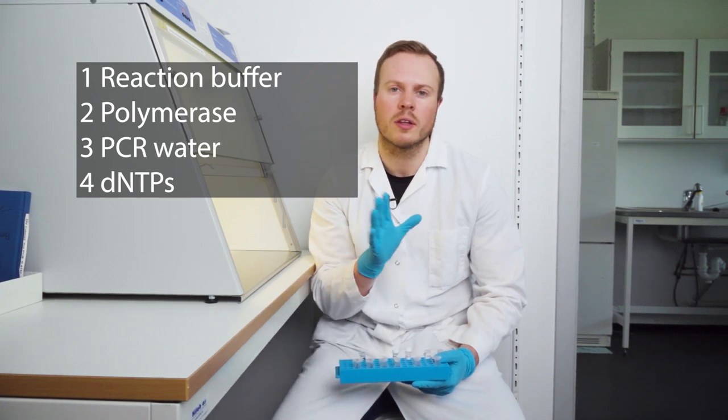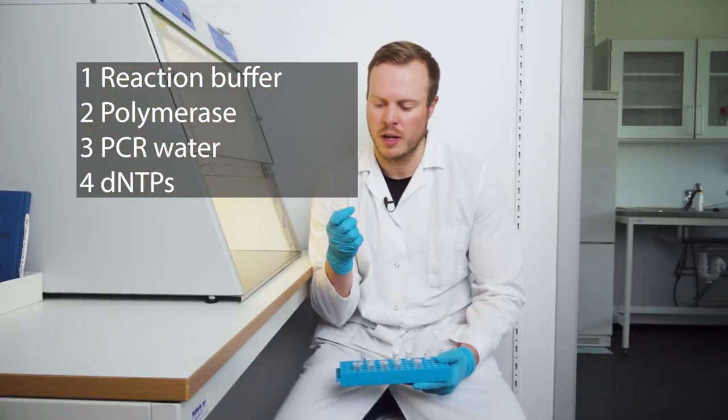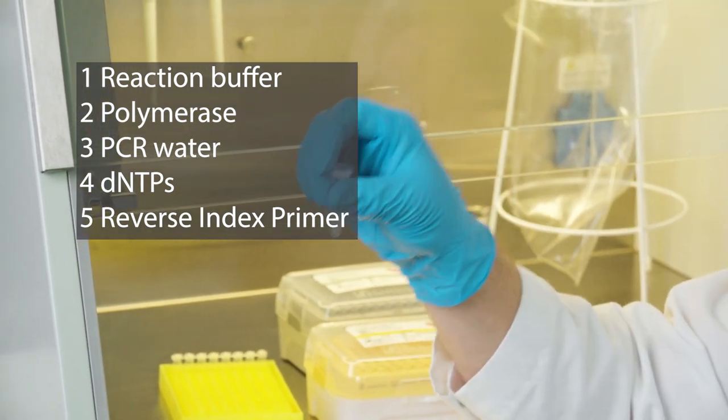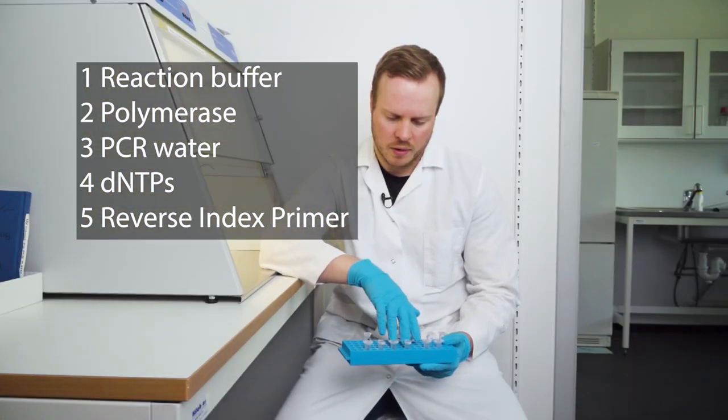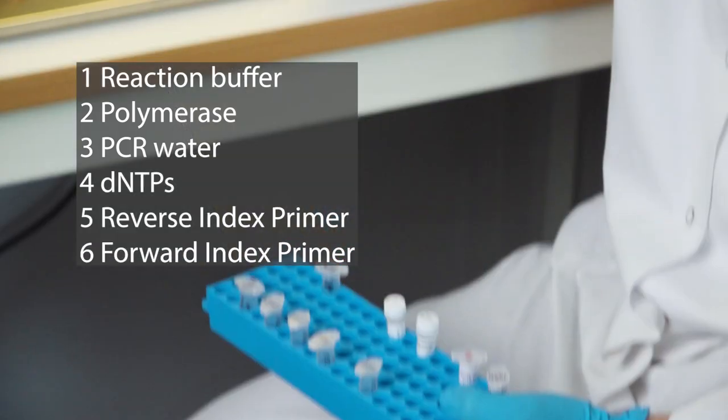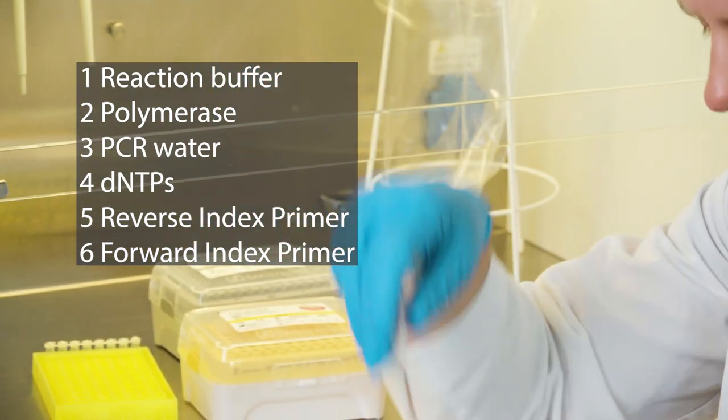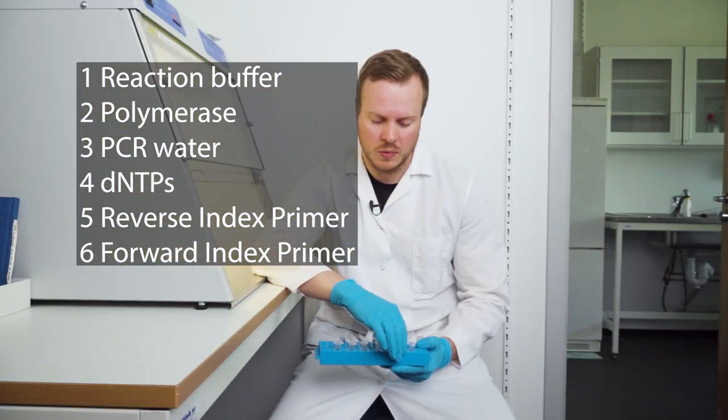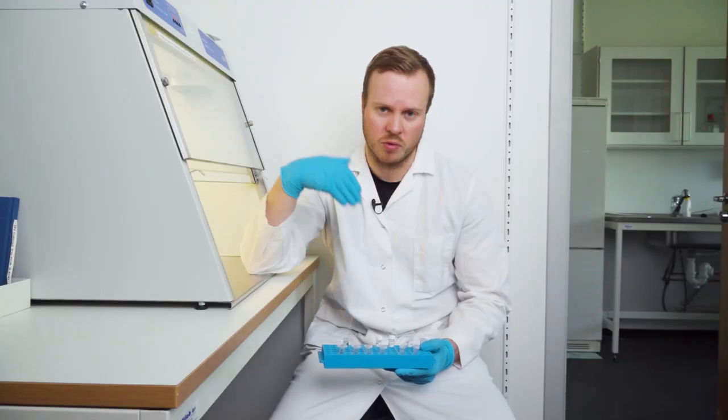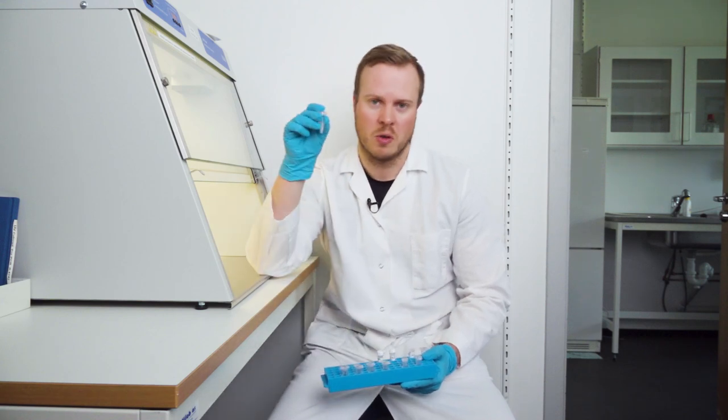But the thing that differs from PCR-1 is that we don't add the index primers. So here I have a tube or an Eppendorf with some reverse index primer. And I have here five tubes with forward index primers. So here I use the same reverse index primer for all of the samples. And this goes up to 20 samples. And then I use different forward index primers. So that's the forward that is kind of the big difference. And this is not added to the master mix, which I have made here.